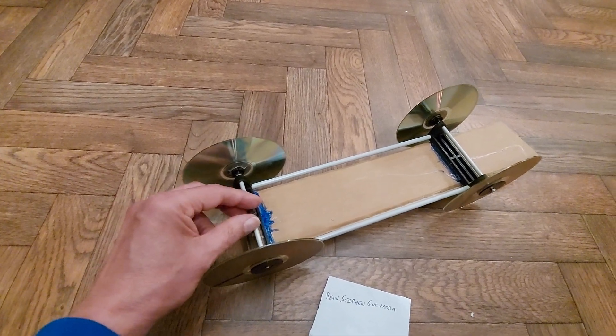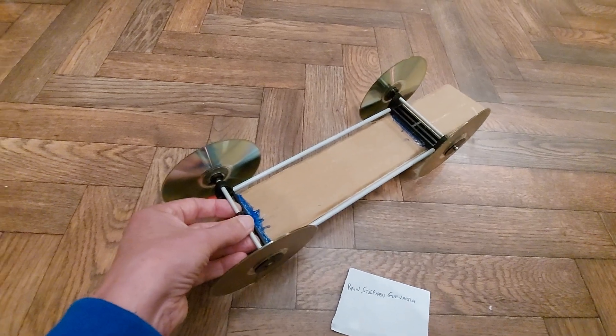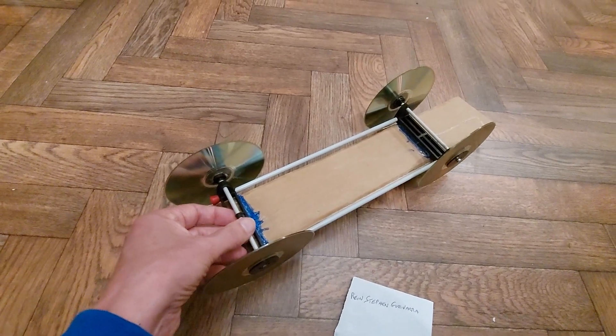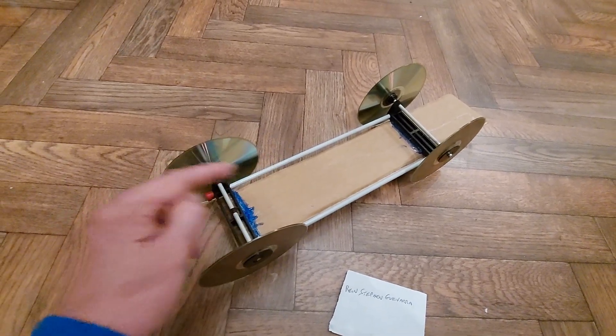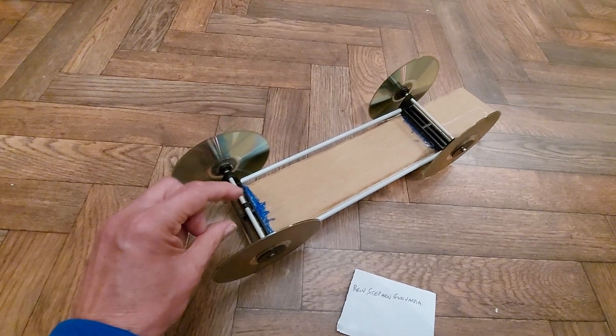A thicker axle will give you more torque, so you'll get faster acceleration. But you won't go so far because when you wrap the rubber band around it, you won't get so many turns around it because it's thicker.